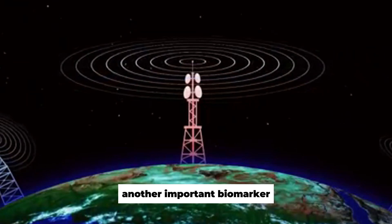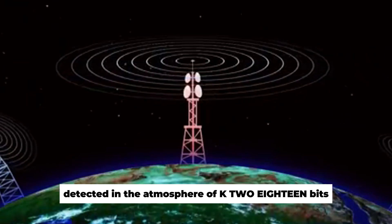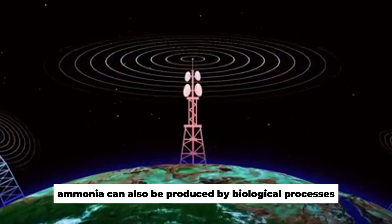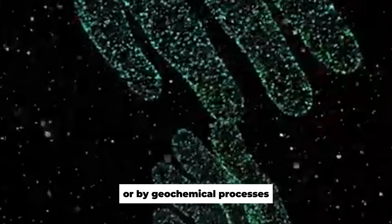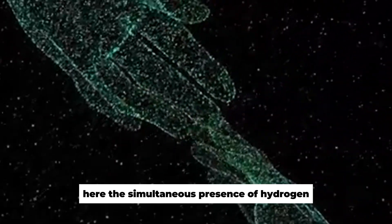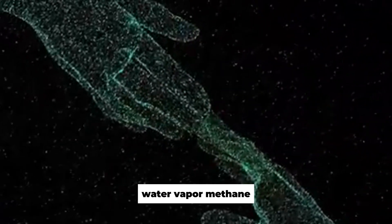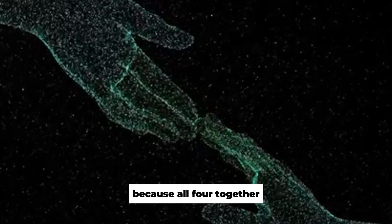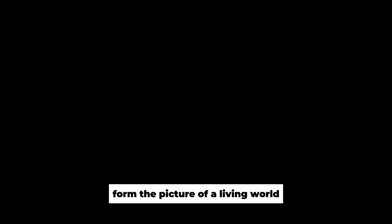Another important biomarker detected in the atmosphere of K2-18b is ammonia. Ammonia can also be produced by biological processes or by geochemical processes. Here, the simultaneous presence of hydrogen, water vapor, methane, and ammonia makes the difference because all four together form the picture of a living world.